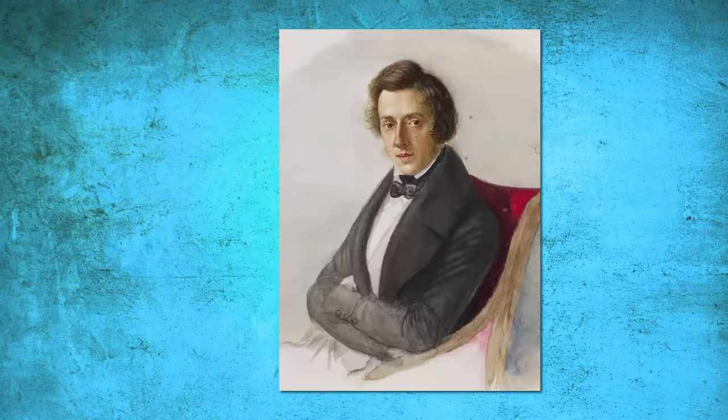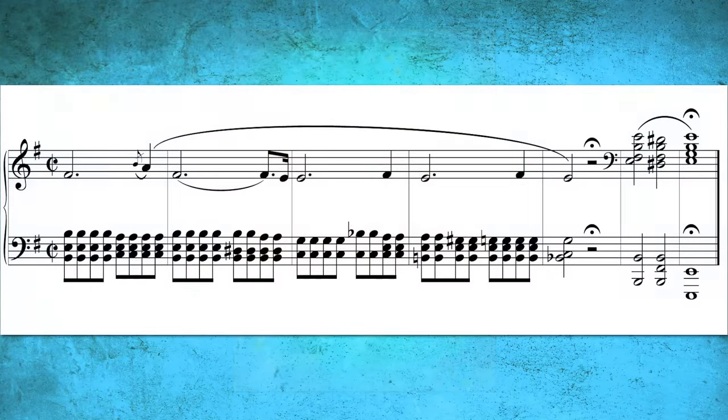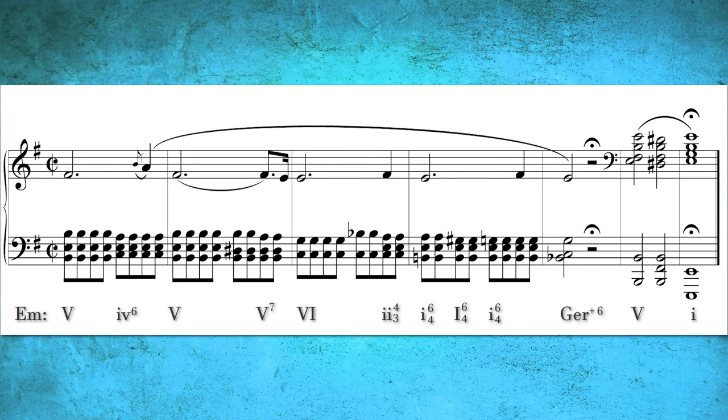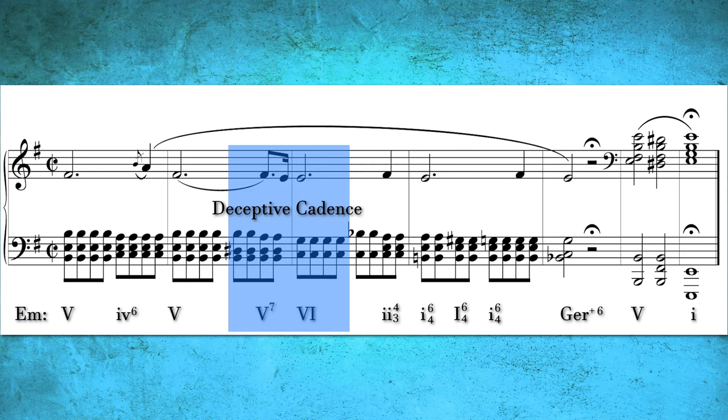In Chopin's Prelude No. 4 in E minor, towards the conclusion of the piece, there's a palpable sense that the music is gradually fading away. Chopin's adept use of the deceptive cadence contributes to this feeling, creating an illusion of fleeting hope before the inevitable conclusion. The deceptive cadence offers a brief glimpse of relief before being swiftly extinguished. In this instance, being in E minor, the deceptive cadence occurs on the major VI chord, C major, only to be abruptly dismissed, leading to the tragic conclusion of this piece.